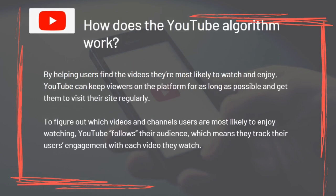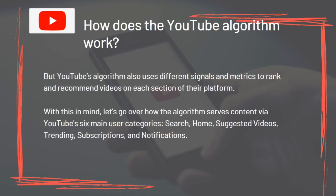By helping users find the videos they are most likely to watch and enjoy, YouTube can keep viewers on the platform for as long as possible. To figure out which videos and channels users are most likely to enjoy, YouTube tracks users' engagement with each video they watch. YouTube's algorithm also uses different signals and metrics to rank and recommend videos on each section of their platform.